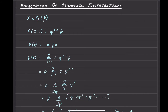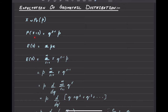...you should already know that the probability of x equals r is equal to q to the power r minus 1 times p, where q is the probability of failure, p is the probability of success, and q equals 1 minus p.